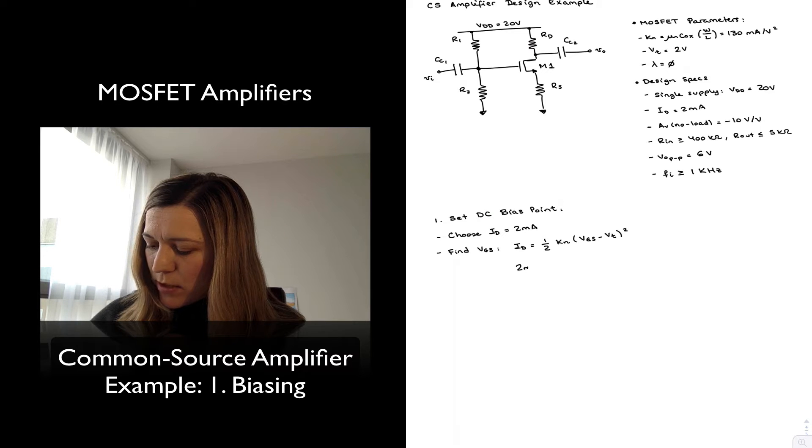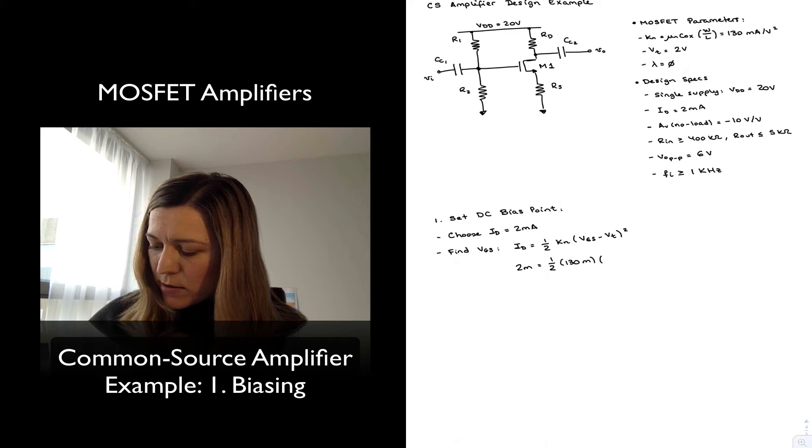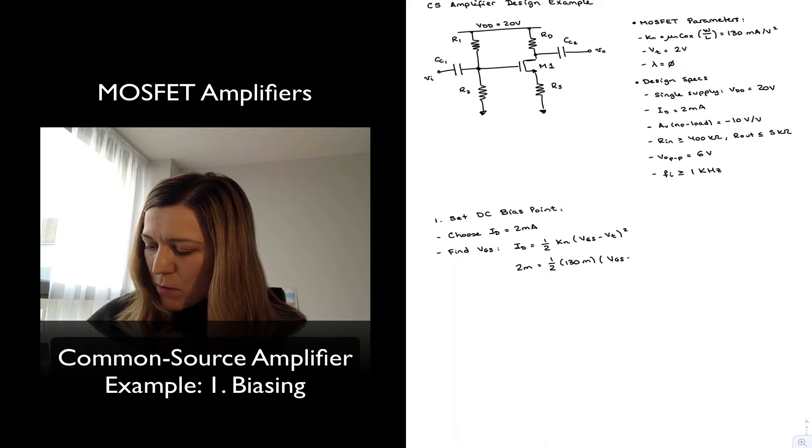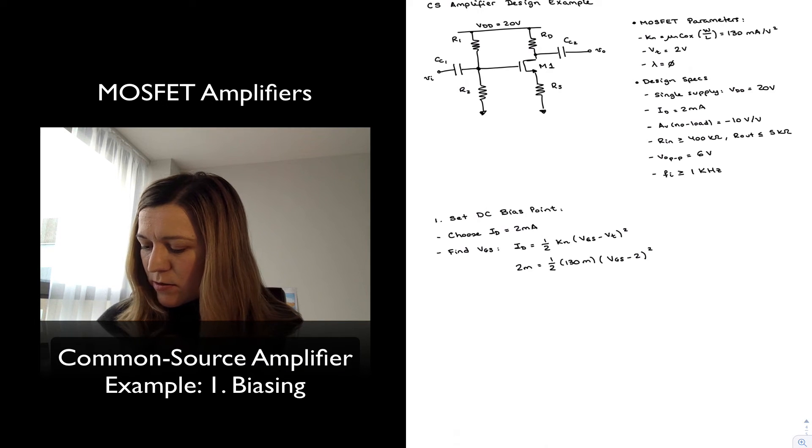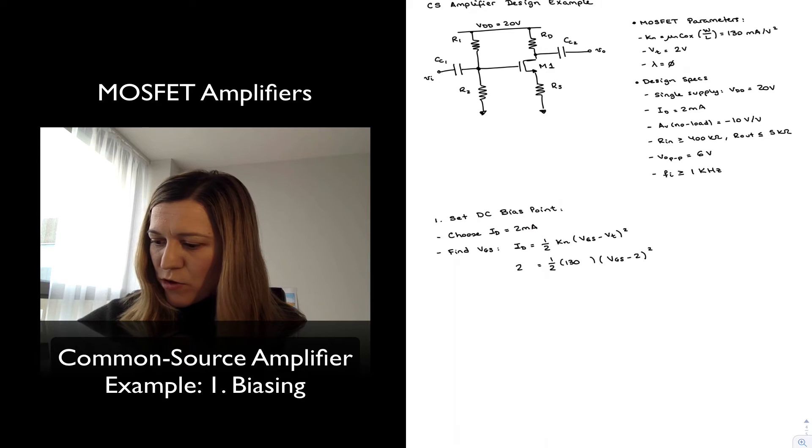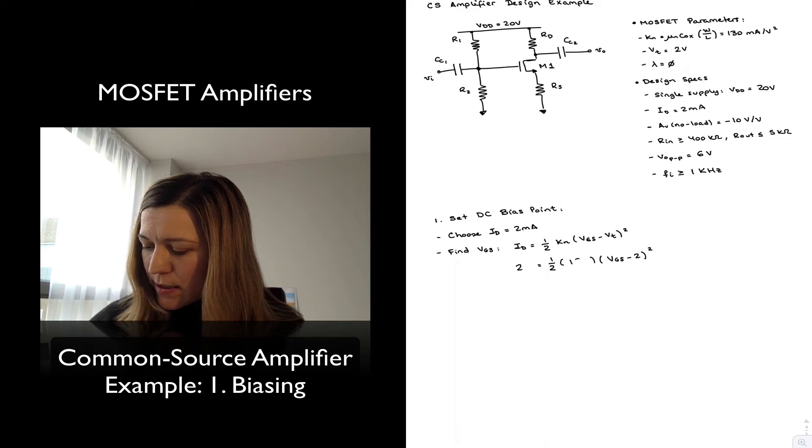So I can start substituting values. This is going to be 2 milli equals 0.5 times 130 milli times (VGS - 2)². If I want to simplify a little bit, I can drop the millis since I have times 10 to the negative 3 multiplied on both sides.